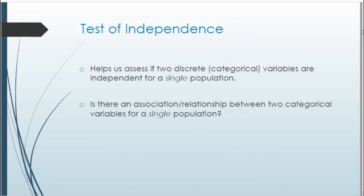Our next type of test is the test of independence. This helps us assess if two discrete or categorical variables are independent for one single population. The main question we're trying to answer is whether there is a relationship between two variables for that one single population. One thing to note is that we're always working with one population and looking at two different variables and seeing the relationship between them.